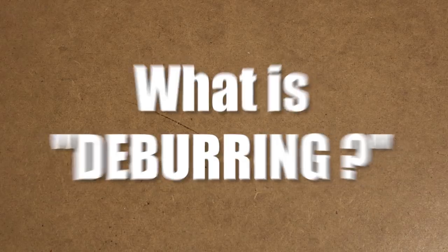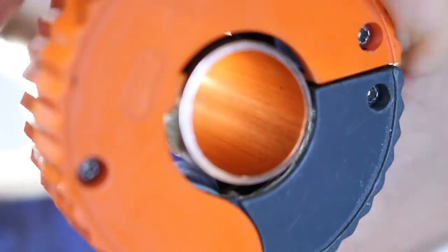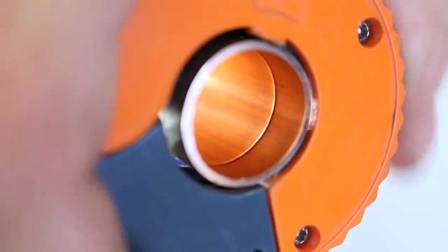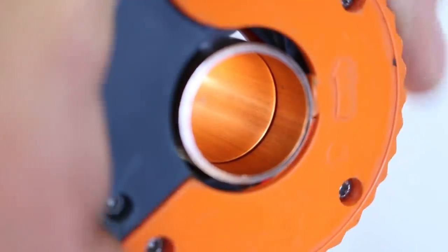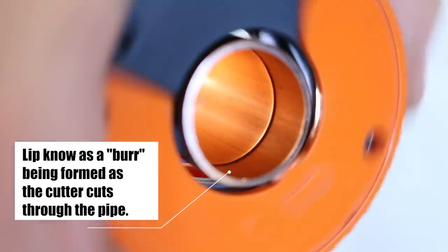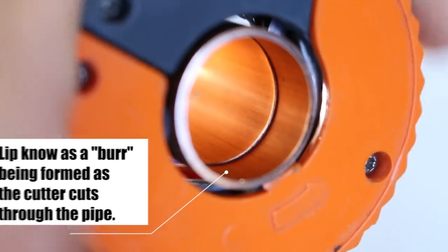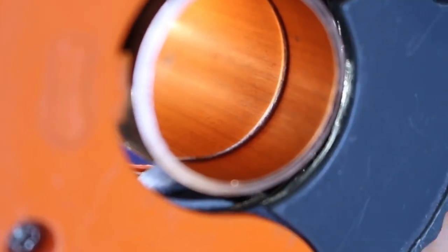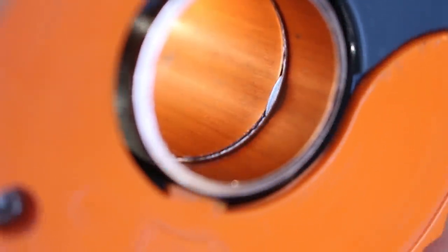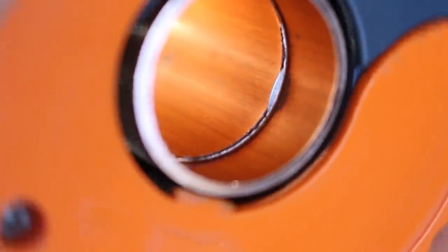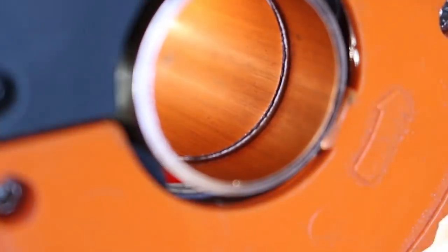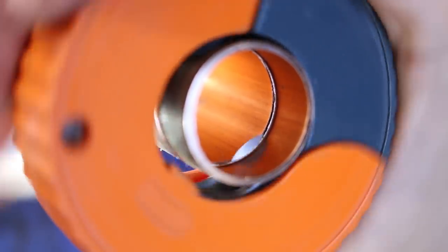So what exactly is deburring a pipe? Deburring is to remove the lip caused by a rotary cutter or handsaw after the cut using a deburring tool. When you cut a pipe with a rotary cutter like this one no material is removed. Instead it's displaced mostly inwards but also a little bit outwards leaving a lip or sharp edge on the outside and inside of the pipe.